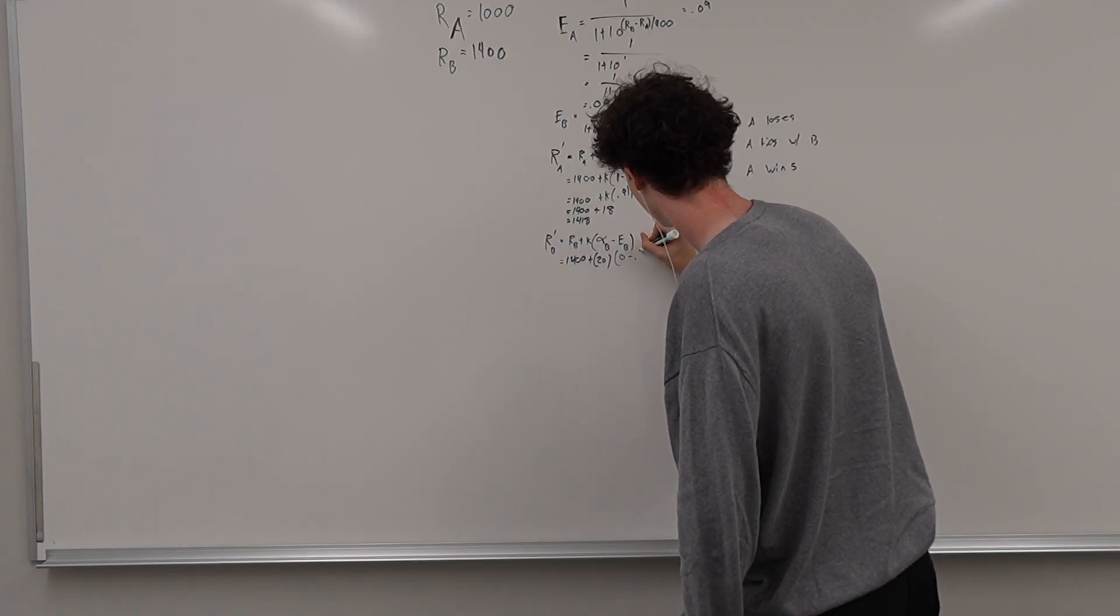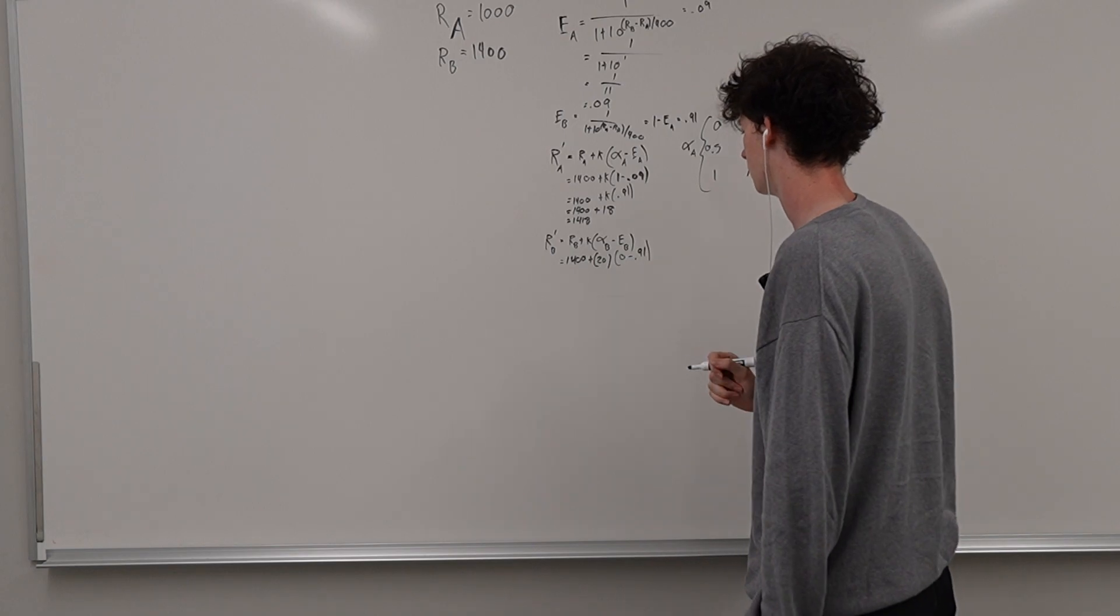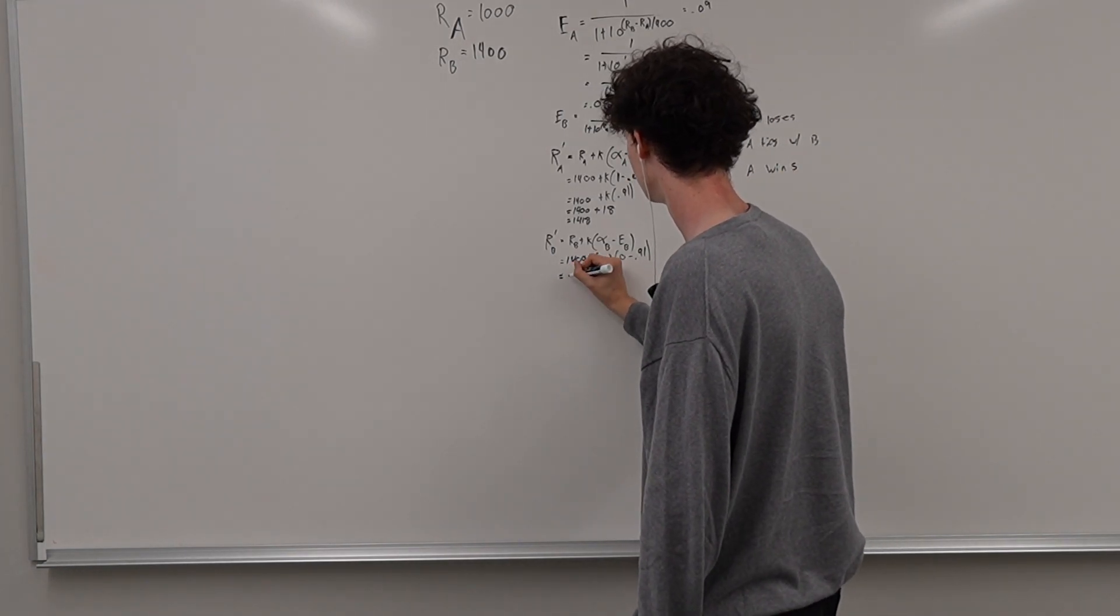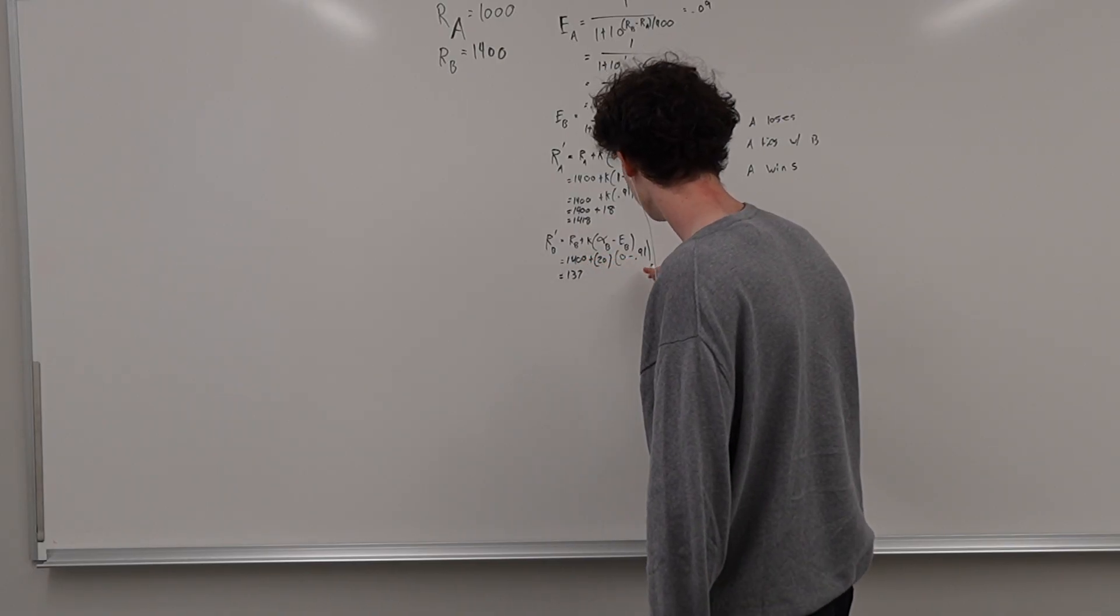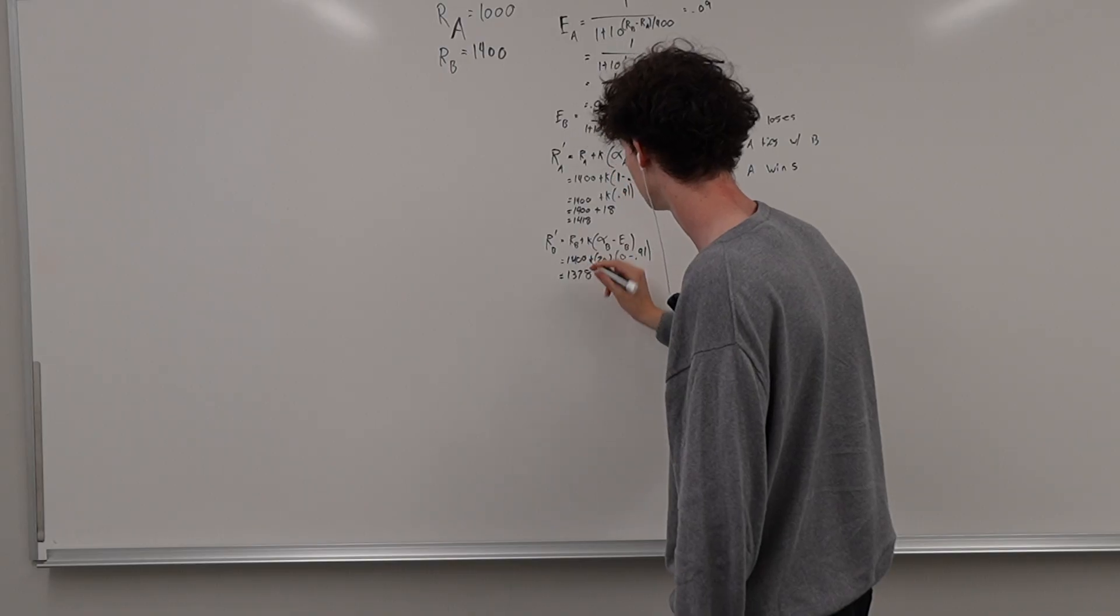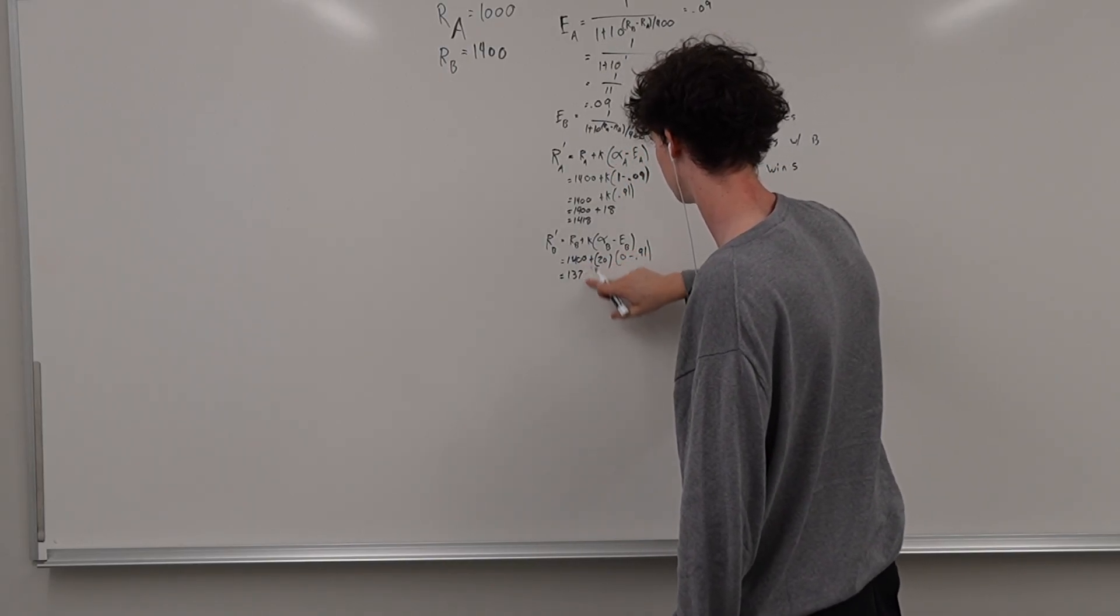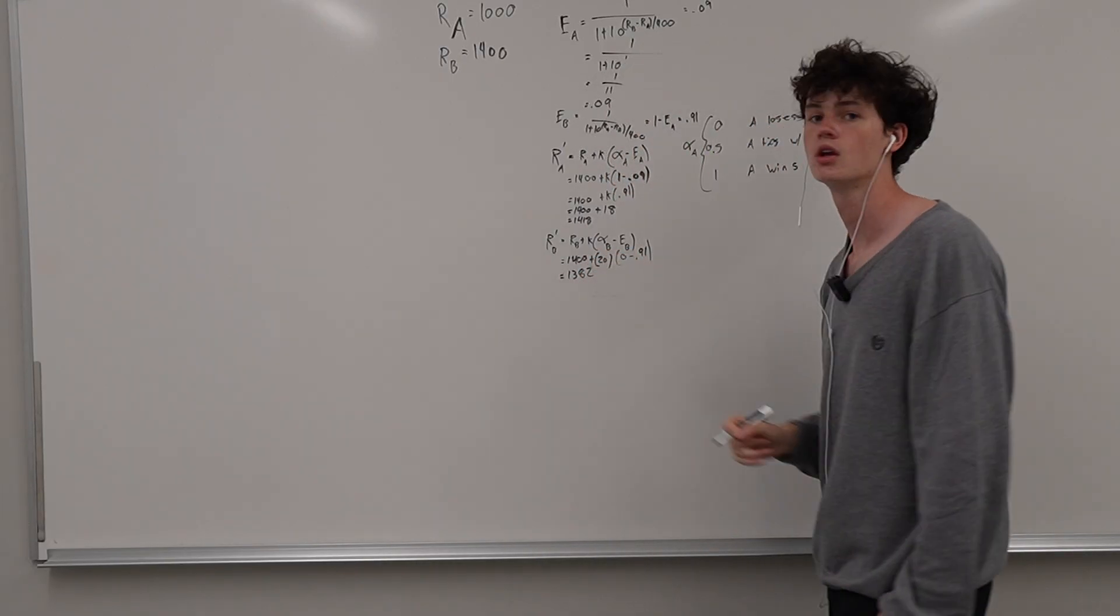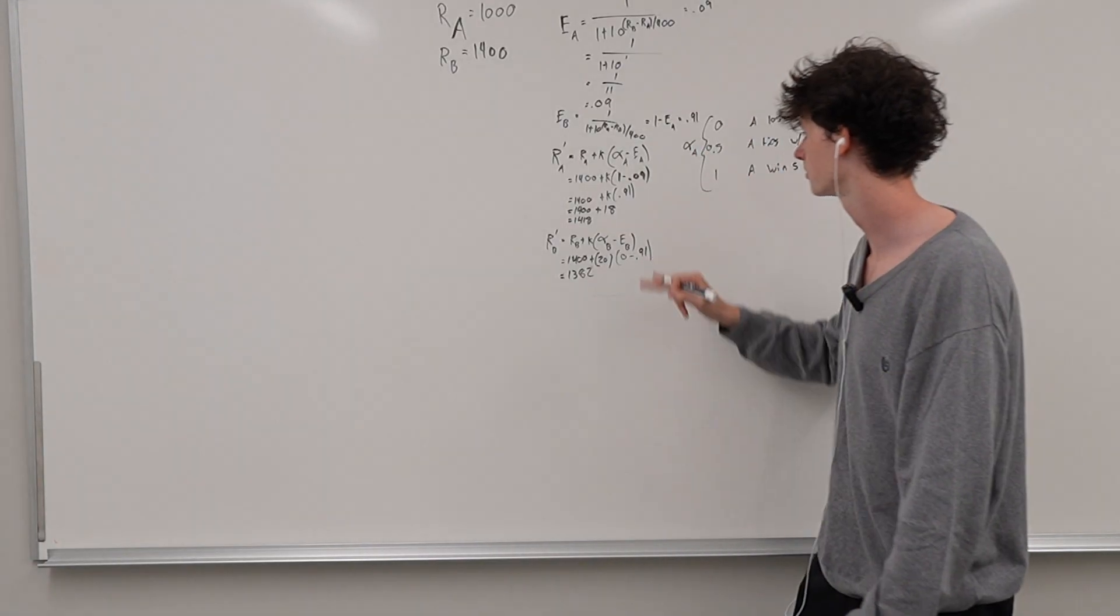So this is going to be 0 minus EB. The expected outcome is person B wins 91% of the time. So this is going to be minus 0.91. And so this person's rating is going to drop 18 points. Wait, 1382. So that is going to be the updated rating for both the players.